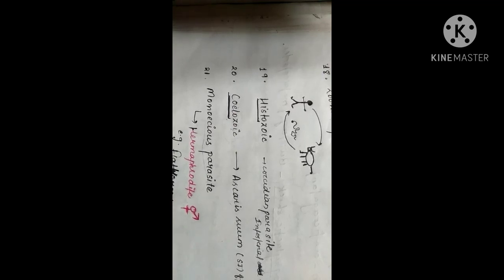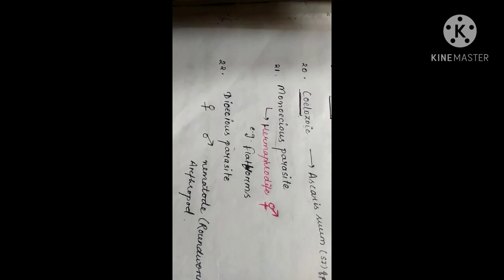The next is monoecious parasite. Monoecious parasites are those parasites which can be called hermaphrodites, as the male and female sex organs are present in a single parasite. For example, flatworms.